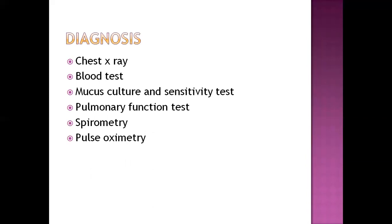Diagnosis can be done by chest X-ray, blood test, and mucus culture and sensitivity test. The mucus culture helps find out the nature of the bacteria. Chest X-ray helps to find out which space the infection is occurring in. Blood test helps find out the levels of normal blood particles within range. Pulmonary function test, spirometry, and pulse oximetry help assess how the lungs are performing, how gas exchange is taking place, and what the level of oxygen in the blood is.